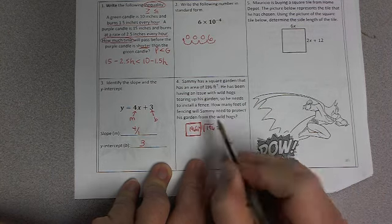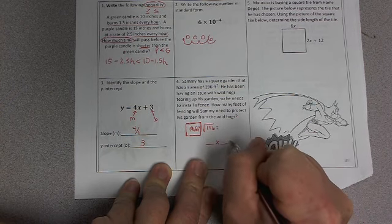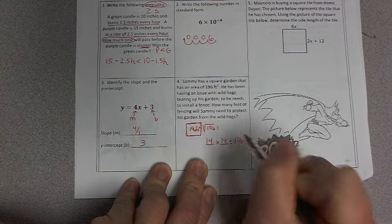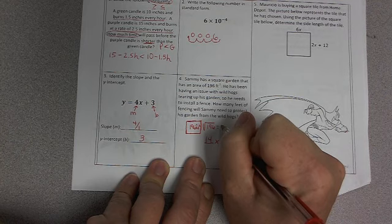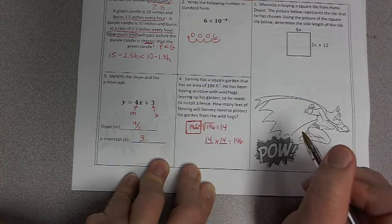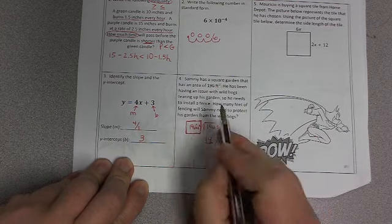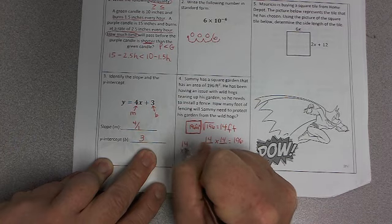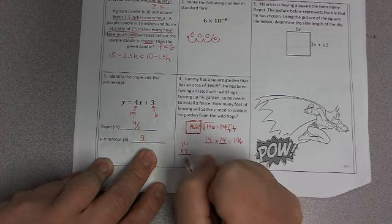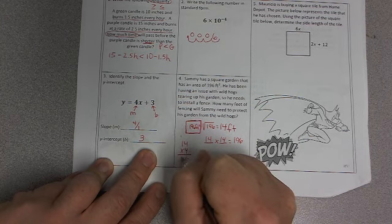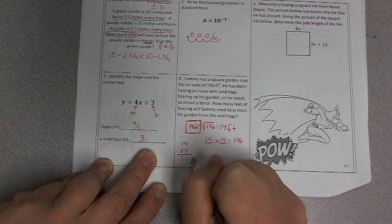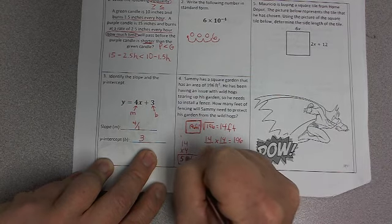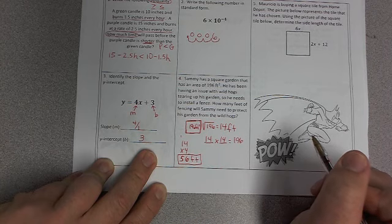So when you take the square root, you're asking yourself, what number times itself equals 196? Let's try 14. 14 times 14, does that equal 196? And you see that it does. So the square root of 196 is 14. So now that we know that one side length is 14 feet, to find the perimeter, we can multiply that number by 4. So we need to order 56 feet of fencing in order to enclose the entire perimeter of the garden.